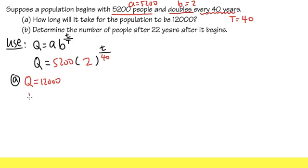And then I just have to put this right here. So we see 12,000 is equal to 5,200 times two raised to the t divided by 40th power like this. Divide both sides by 5,200.